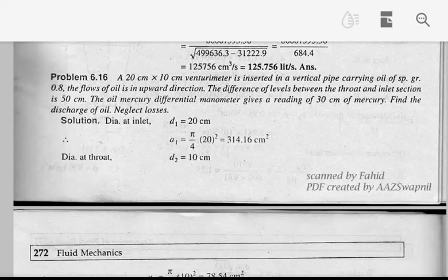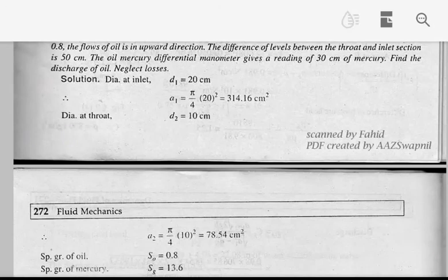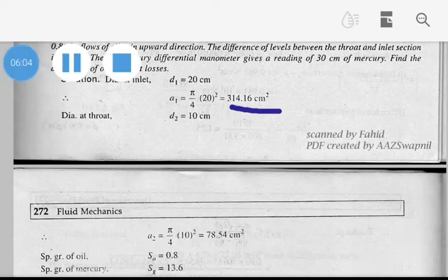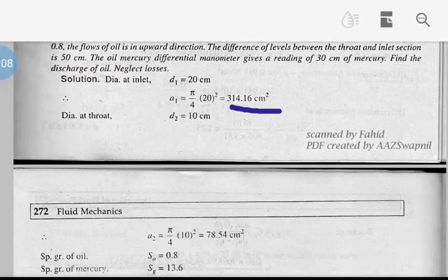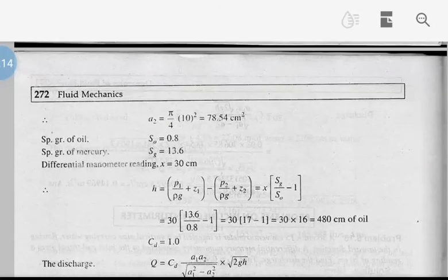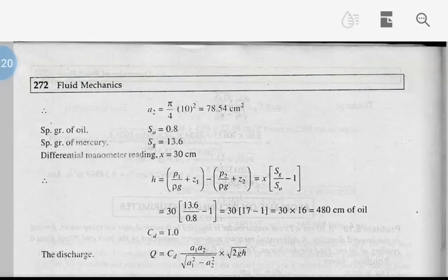The oil-mercury differential manometer gives 30 cm of mercury. D1 is 20 cm, so A1 equals π/4 × D1² equals 314.16 cm². D2 is 10 cm, and A2 equals π/4 × D2² equals 78.54 cm².